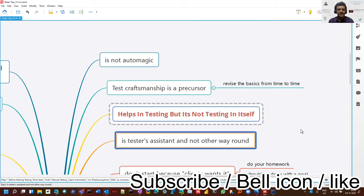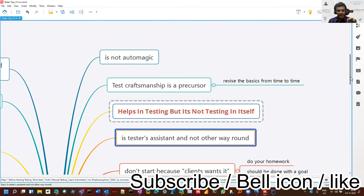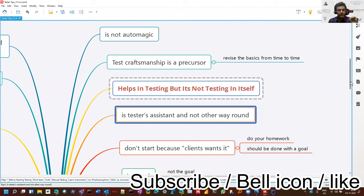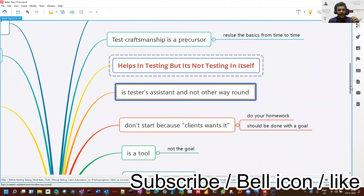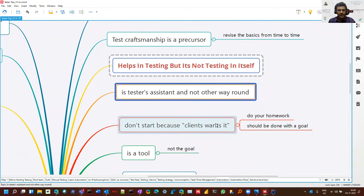It is a tester's assistant. It will help you in doing the test execution part. Automation is not doing any test planning, test designing. All those things are being taken care of still by people only. Nobody's writing the scenarios for you. So test automation is helping you, it's an assistant for you, not the other way around.